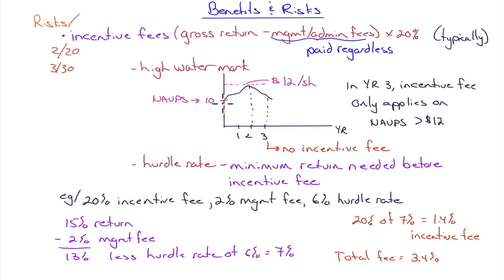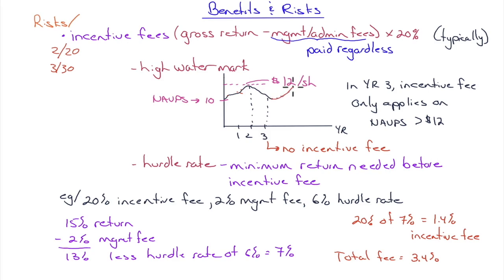The high watermark works like this: if at the start of year one the net asset value per share is $10, it hits a high of $12 in year two, but falls back to $10 in year three — in year three the incentive fee only applies on net asset value per share above $12. Management has already been paid up to $12; if it falls to $10 and comes back to $12, they don't get paid again until they exceed the previous high watermark.